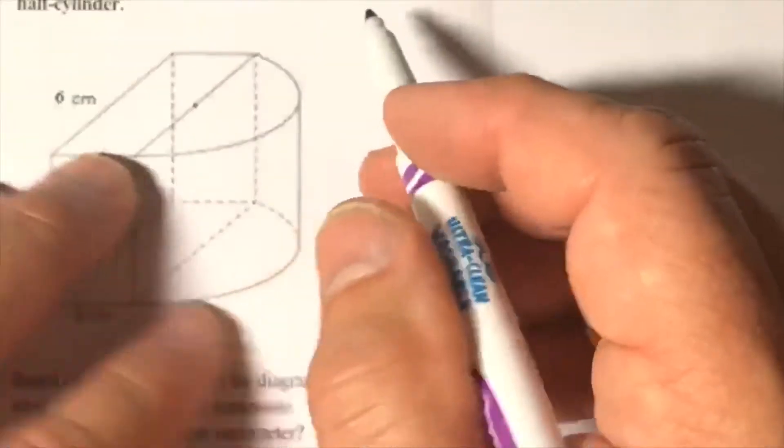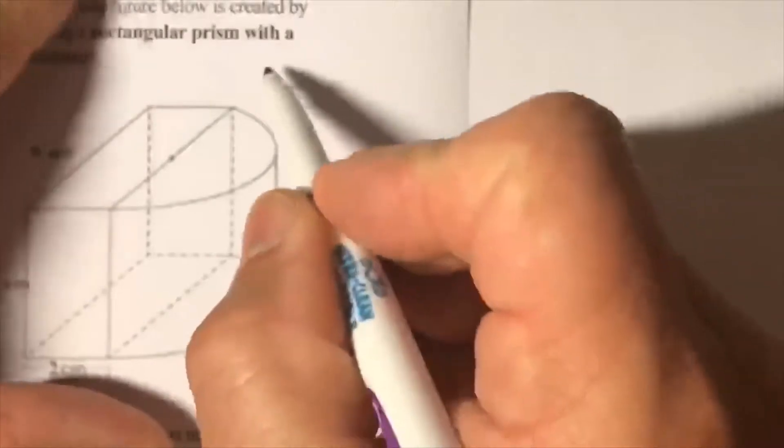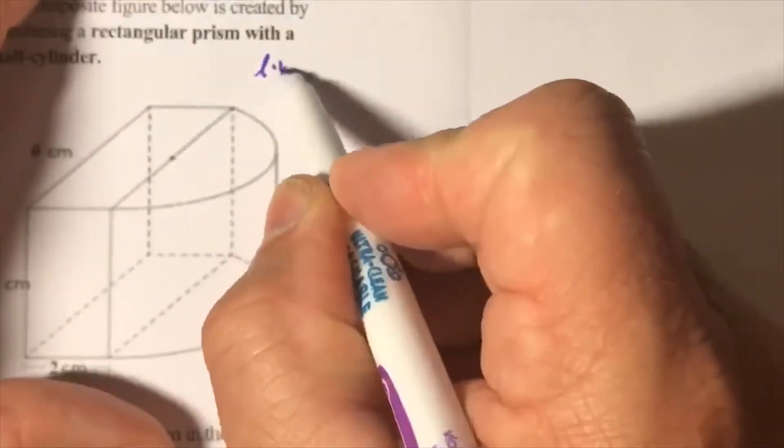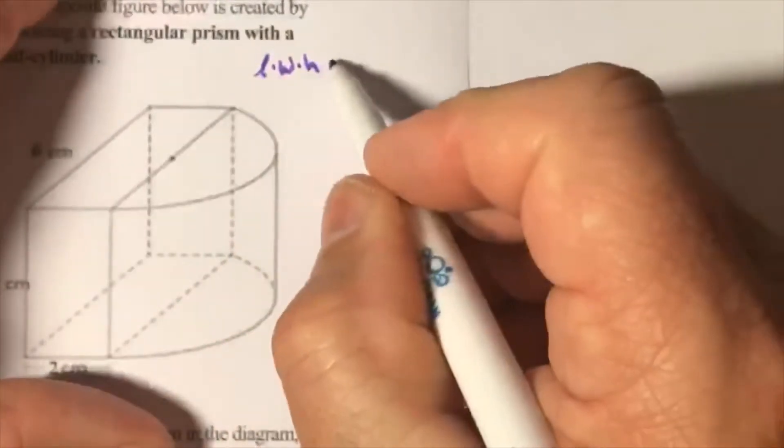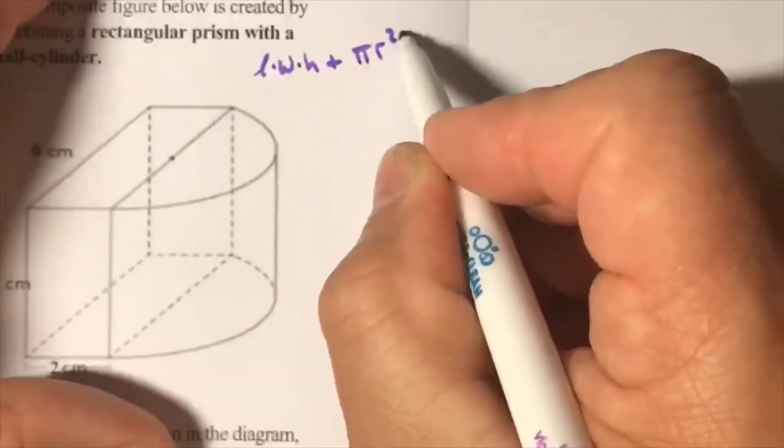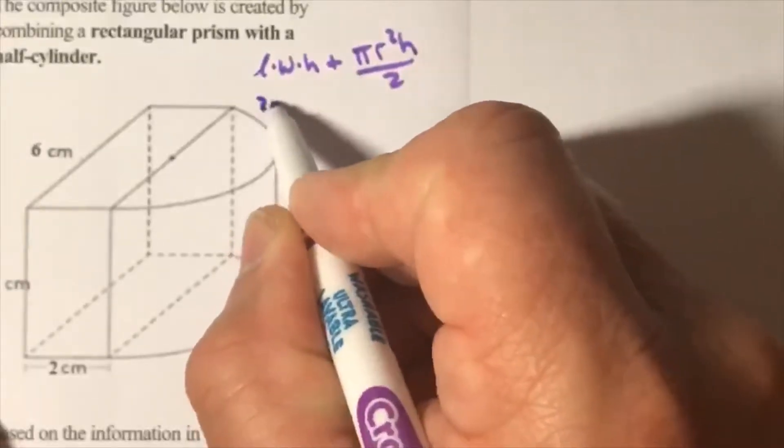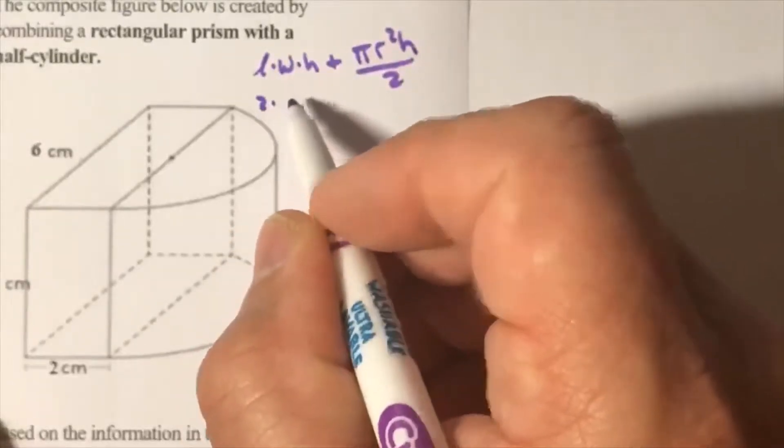So up here let's go ahead and put in length times width times height - that's for the prism - plus pi r squared h divided by 2 for the half cylinder.